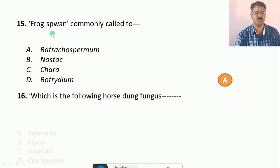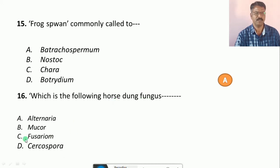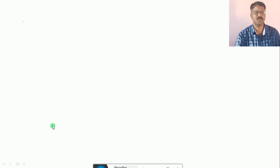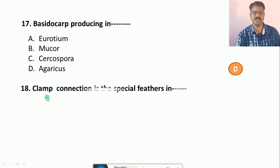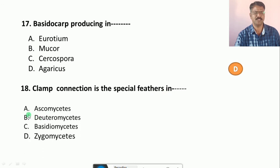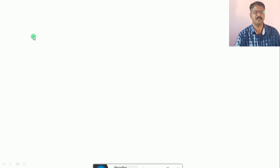Question number 16: Which of the following horse-dung fungus? Their options are A. Alternaria, B. Mucor, C. Fusarium, D. Cercospora. The correct answer is B, that is Mucor. Question number 17: Basidiocarp producing in... Their options are A. Rhizopus, B. Mucor, C. Cercospora, D. Agaricus. The correct answer is D, that is Agaricus. Question number 18: Clamp connection is the special feature of the characters in... Their options are A. Ascomycetes, B. Deuteromycetes, C. Basidiomycetes, D. Zygomycetes. The correct answer is C, that is Basidiomycetes.